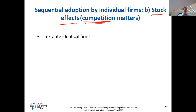Second, diffusion in the rank effects model requires heterogeneous firms. For a theoretician it's also interesting whether, even among ex-ante identical firms, you could get sequential adoption — that is, diffusion. I'm going to present work by Jennifer Reinganum published in the early 1980s.